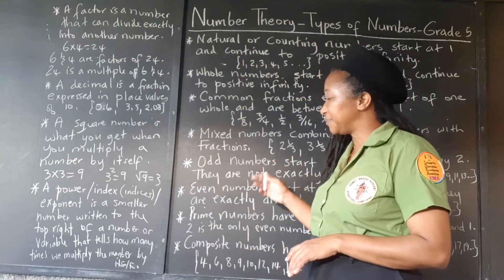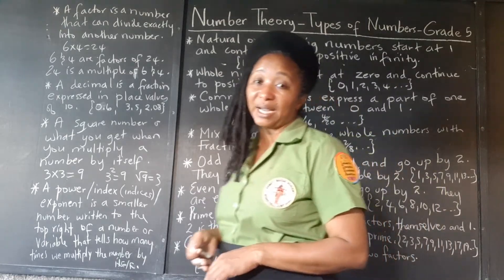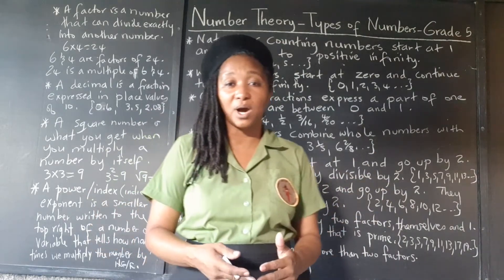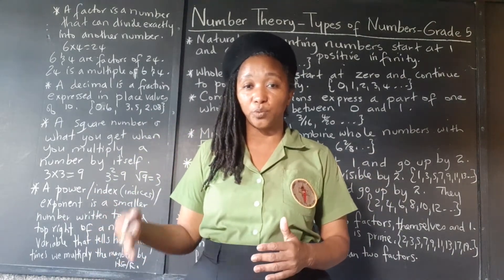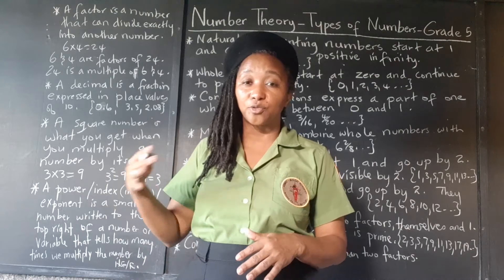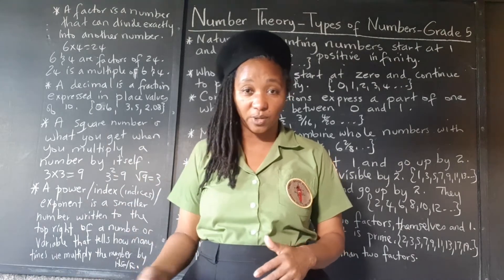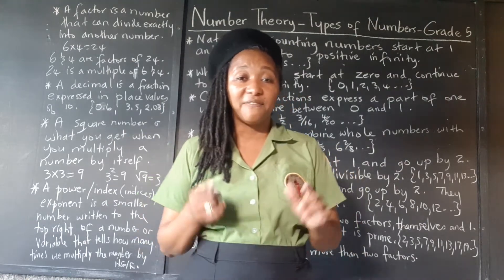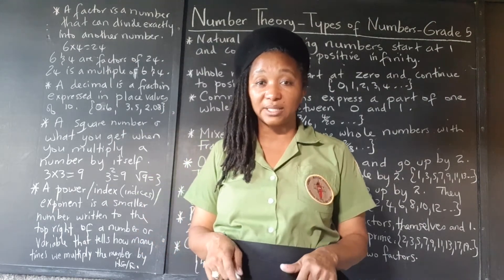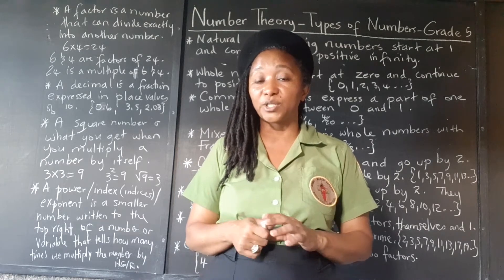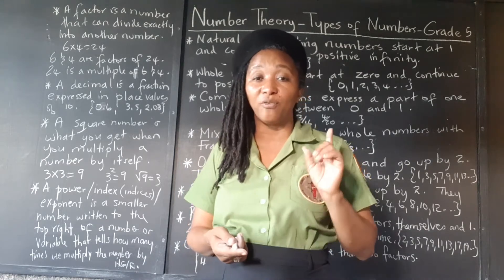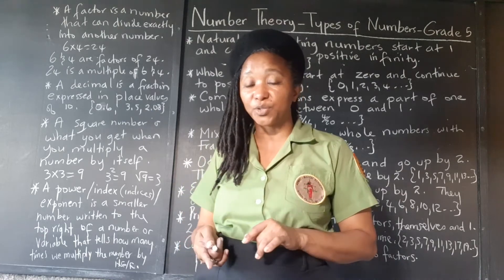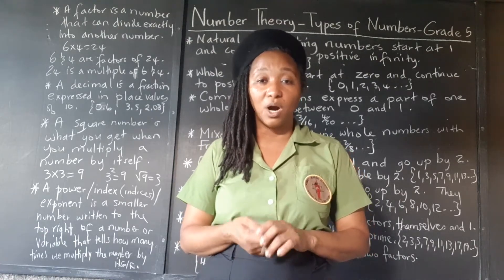Now odd numbers. Odd numbers start at one and go up by two. So if we start at one, the next odd number is one plus two, which is three. The next one is three plus two, which is five, and so on. However, odd numbers are not divisible by two — that means if we divide an odd number by two, we're always going to get a remainder of one.